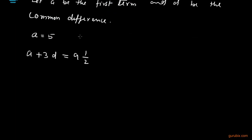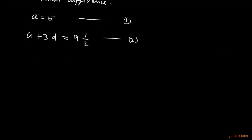So let this a equals to 5 be equation number 1 and this is equation number 2. Now we shall put the value of a in equation number 2. So putting the value of a equals to 5 in equation 2.